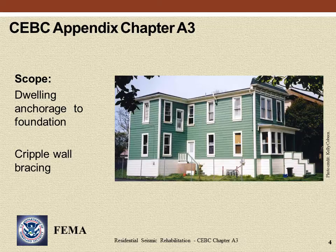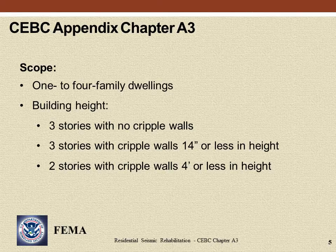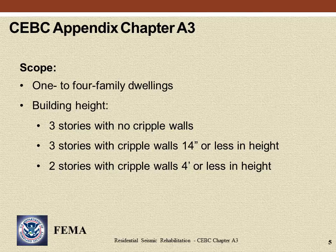In this photo of a Victorian-era home, the white painted cripple walls stand out nicely, highlighting the portion of the building that will be rehabilitated. CEBC Appendix Chapter A3 addresses one to four family dwellings. Residential buildings with five or more units require an engineered rehabilitation design due to greater weight and complexity. The scope limits both the number of stories and height of cripple walls; buildings with more stories and taller cripple walls require an engineered rehabilitation design.